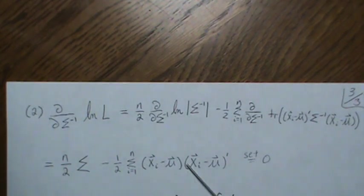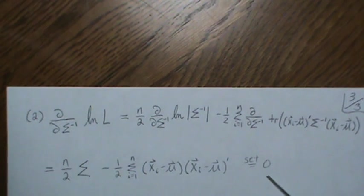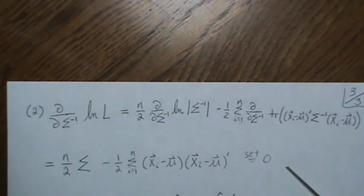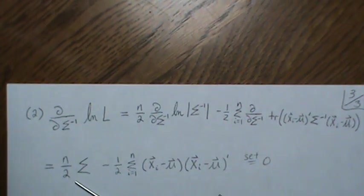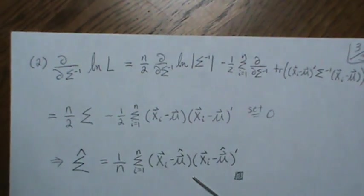Now we subtract or add that to the other side, divide by n over two, and we get the same thing. Sigma is one over n, you know, in this sum. And this is the sample variance-covariance matrix.